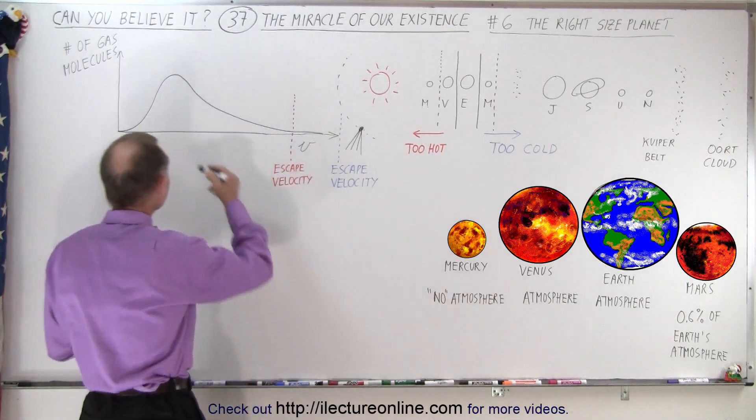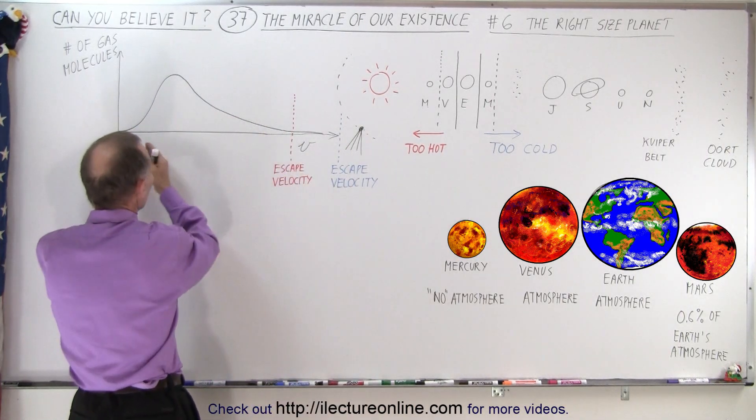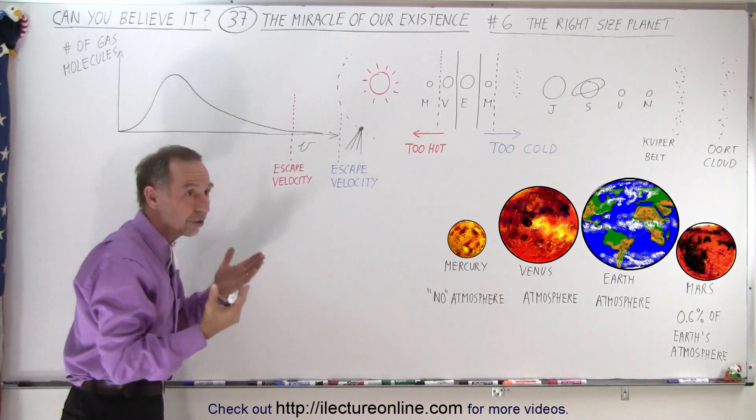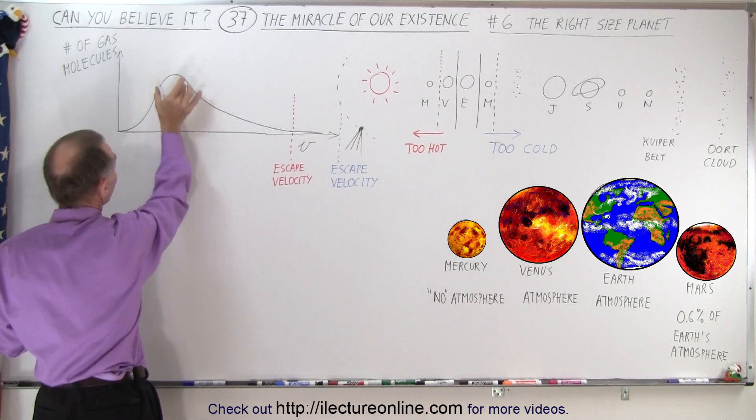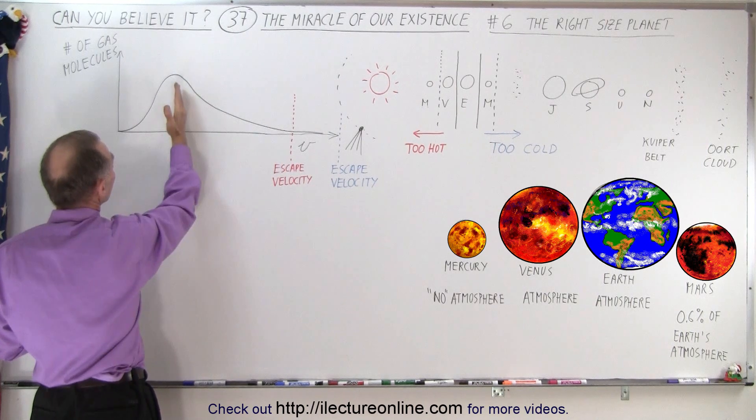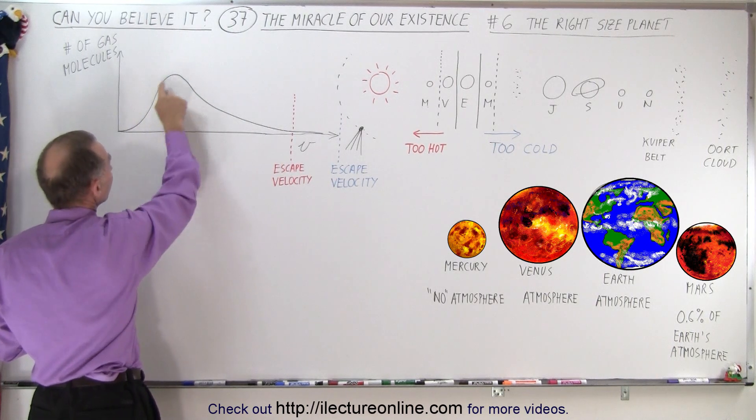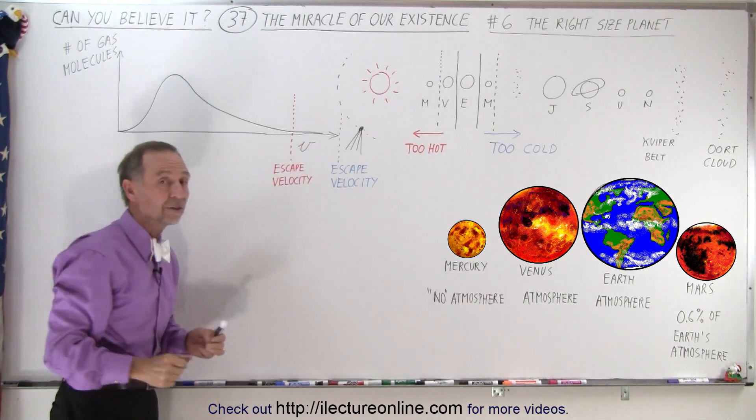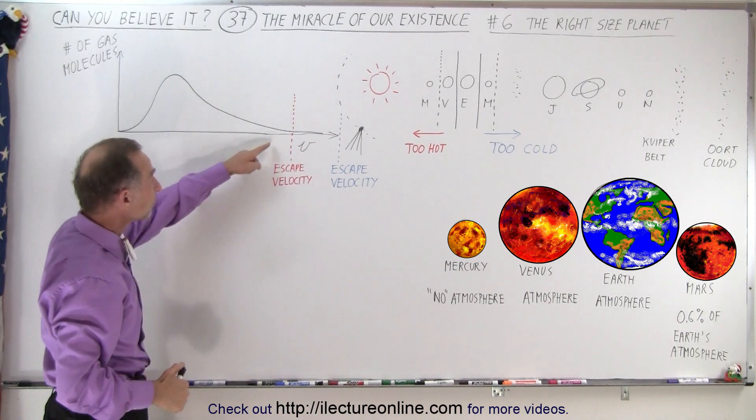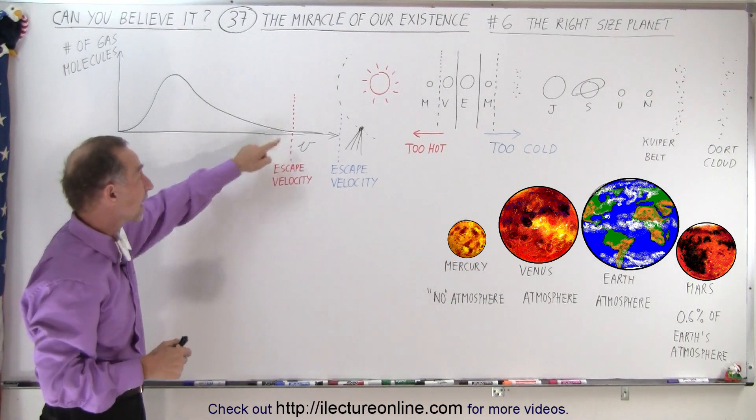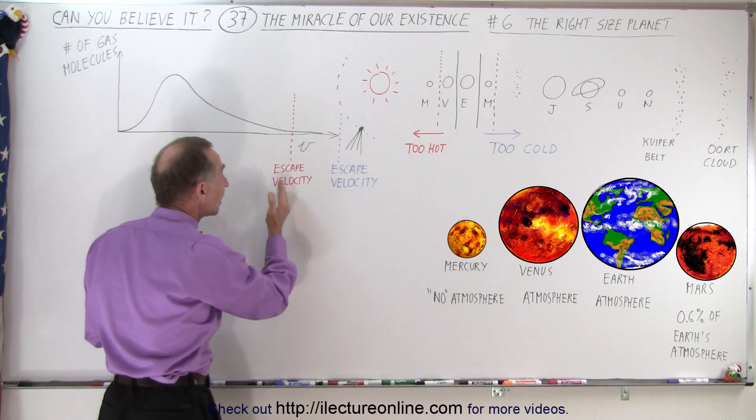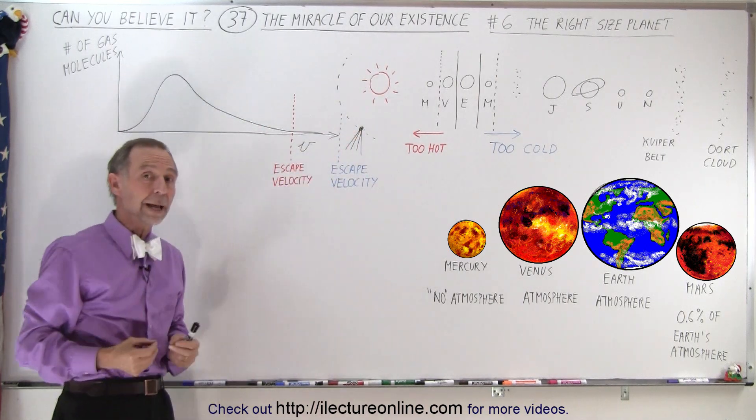Well if we draw a distribution of the velocities of an atmosphere, you can see that most of the molecules in the atmosphere have about this velocity. Some will have a smaller velocity, and some will have a greater velocity. If the velocity of the very fast moving molecules in the atmosphere are greater than the escape velocity, they will escape into space and never come back.